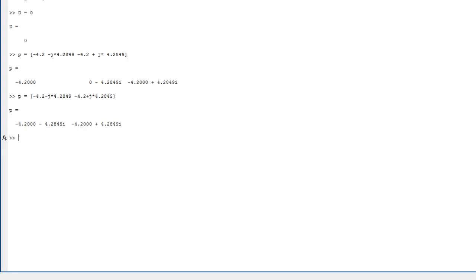We can get the gain K using the place command with A, B, and P. There's K. Notice I should have checked the rank of the controllability matrix given A and B. And that's 2, that's full rank.